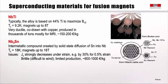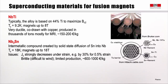All superconducting materials suitable for fusion are type II. The first is niobium-titanium (NbTi), an alloy with about 44% titanium to maximize BC2. Its critical temperature is 9.2 K, and magnets built from it can reach up to 8 Tesla. It is a very ductile material, co-drawn with copper, produced in large quantities mainly for MRI medical applications. Its cost is relatively low — about 150 to 200 euros per kilogram.